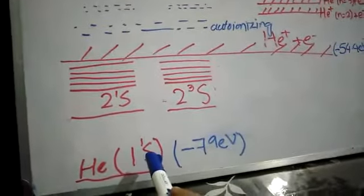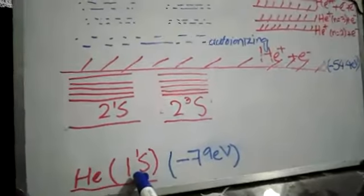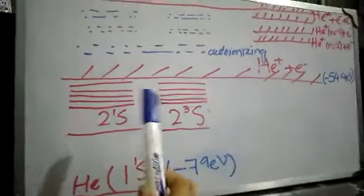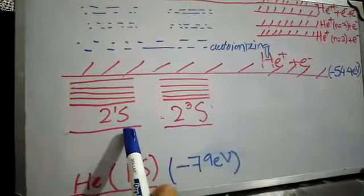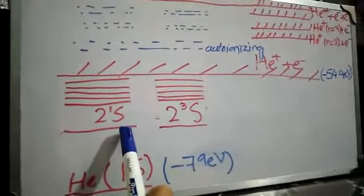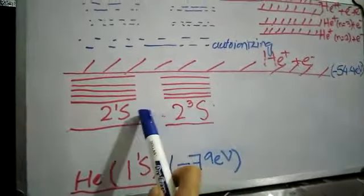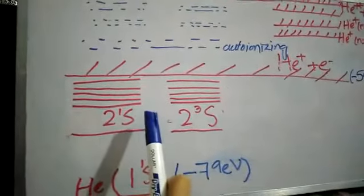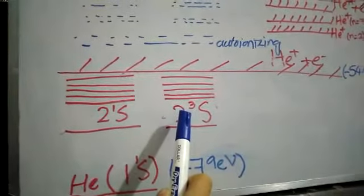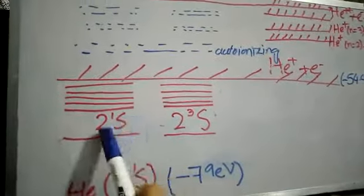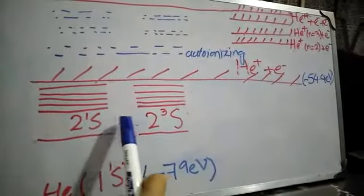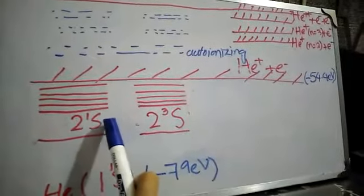Here you can see that when you have helium in its ground state, there is no ionization. The two electrons are in ground state. We can see that its energy is minus 79 electron volts. When you have an electron, it will change its state.